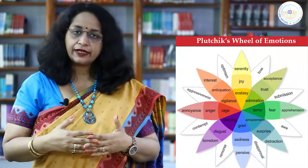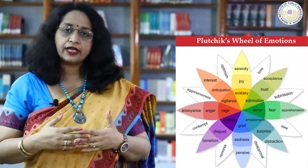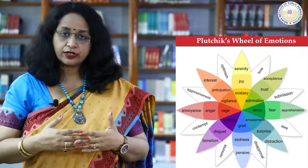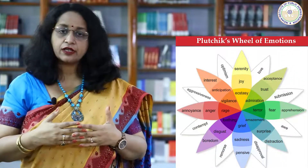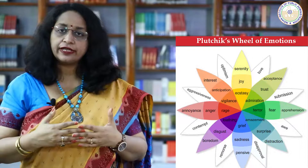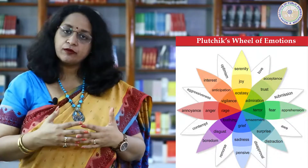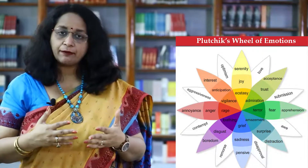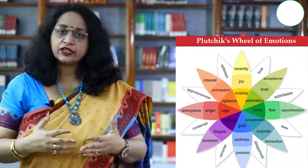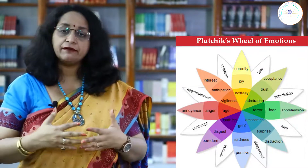In this slide we can see the Plutchik Wheel of Emotions, which indicates a number of emotions such as joy, sorrow, grief, disgust, amusement, and happiness. So these are the range of emotions which any human being feels.